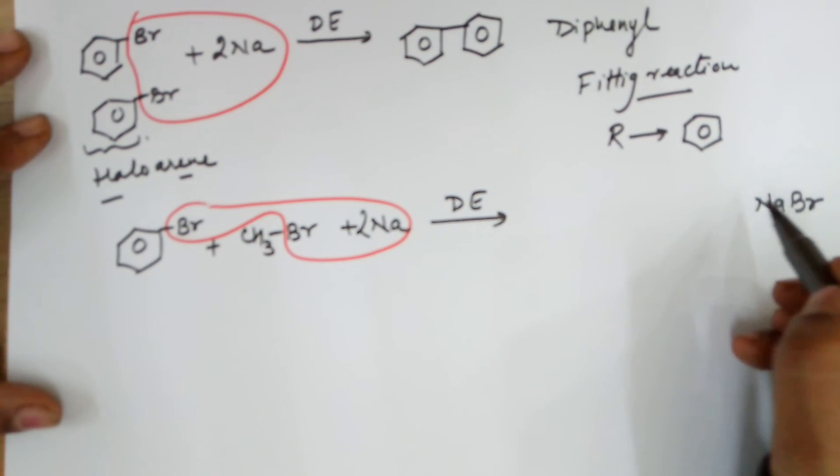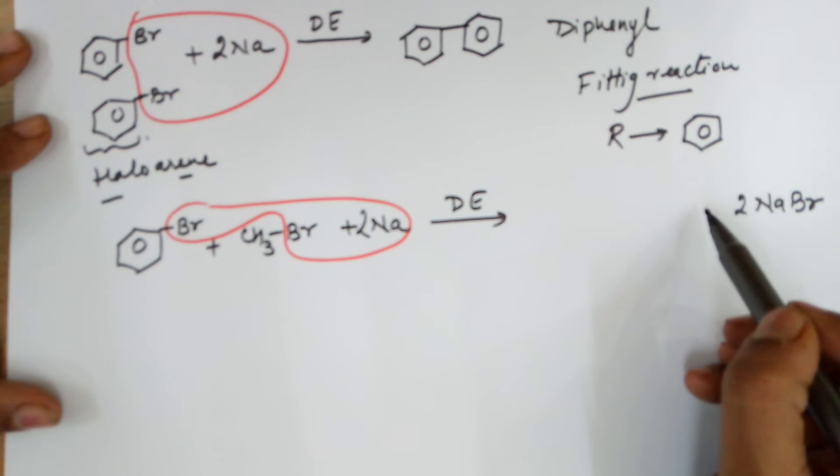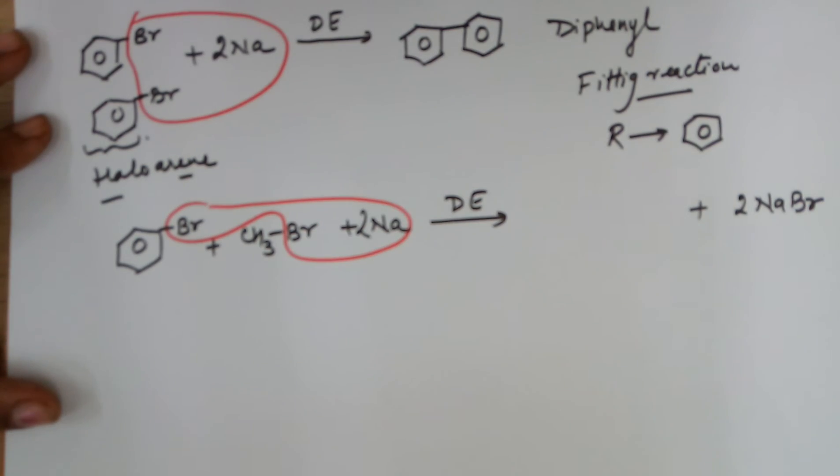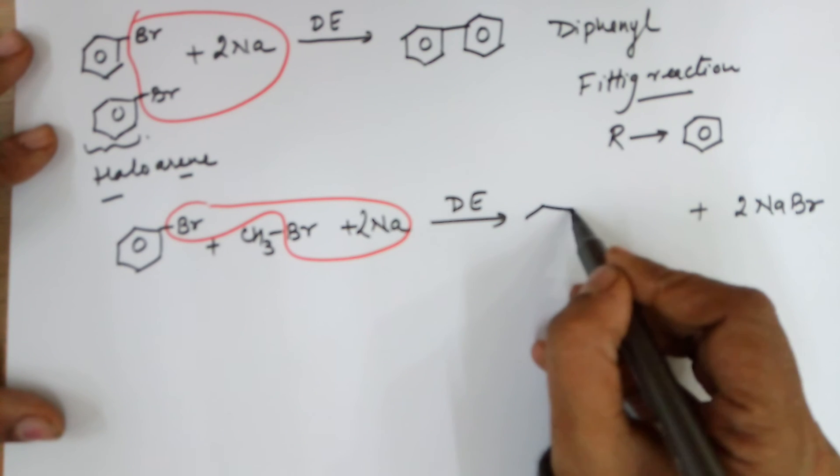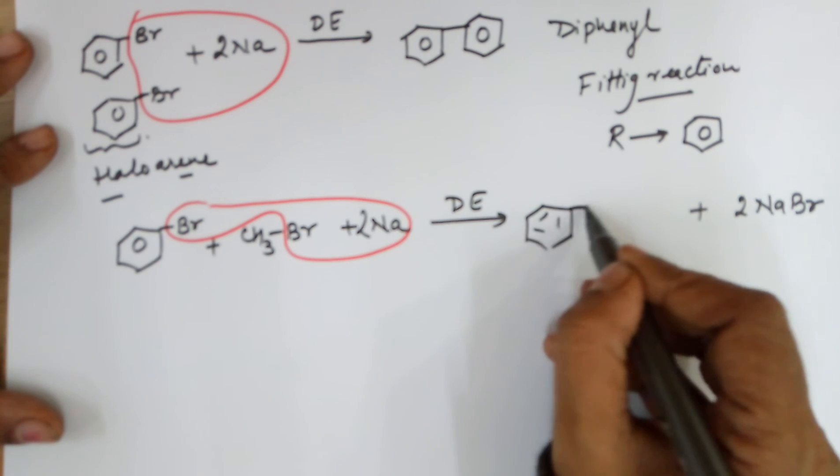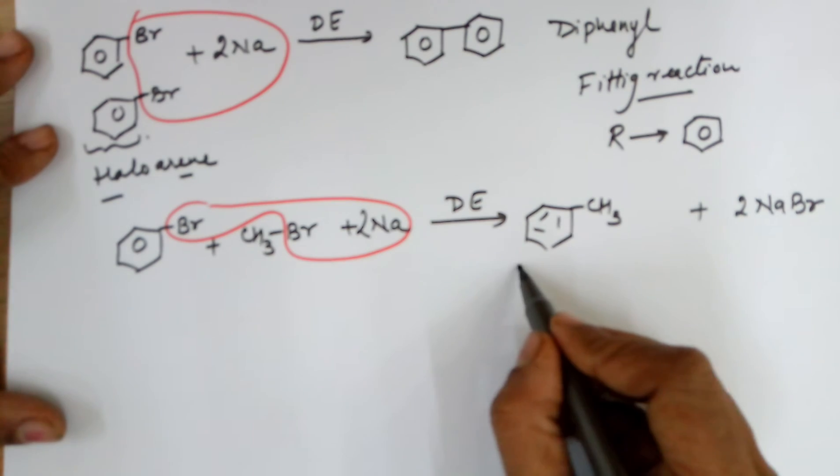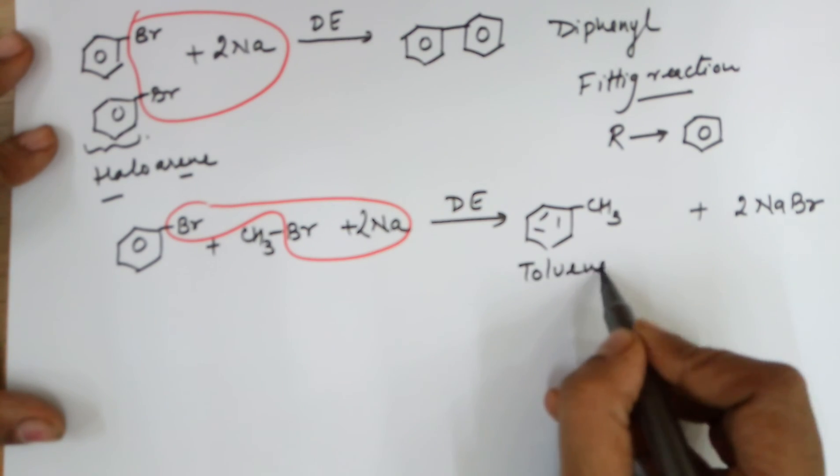For named reactions you may mention the byproducts. Otherwise in organic chemistry, if you are not being asked the named reaction as a question, you may mention the major organic product in the reaction. There is no need for the byproducts. In this case the expected product would be toluene, methylbenzene which is also known as toluene.